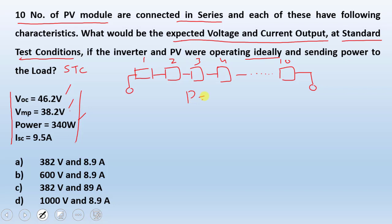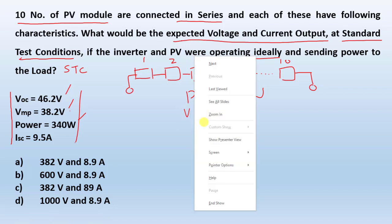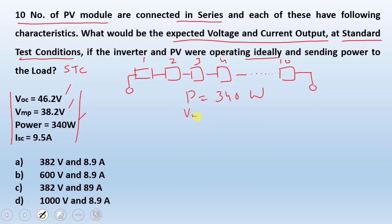What does this mean is that if the power is 340 watts, then the voltage shall be 38.2 volts. So we have power here 340 watts and we have maximum voltage 38.2. So under Standard Test Conditions, the module is operating at or delivering 340 watts and it shall be at the voltage 38.2 volts.